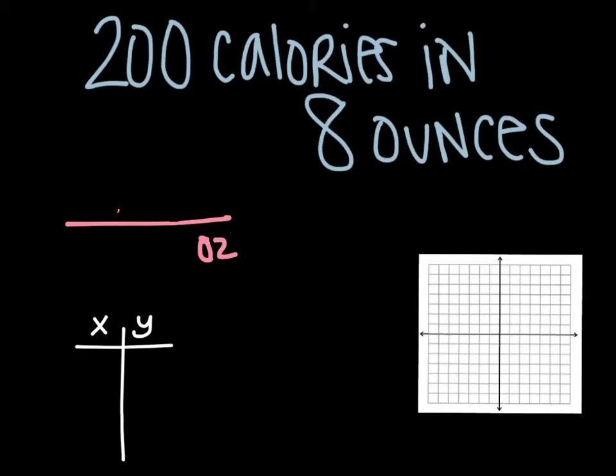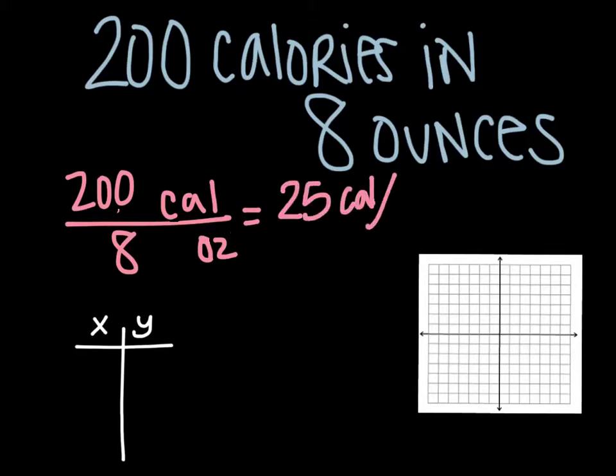So I'm going to divide these out. So 200 divided by 8 ounces, type that in your calculator, and you get 25 calories per 1 ounce.